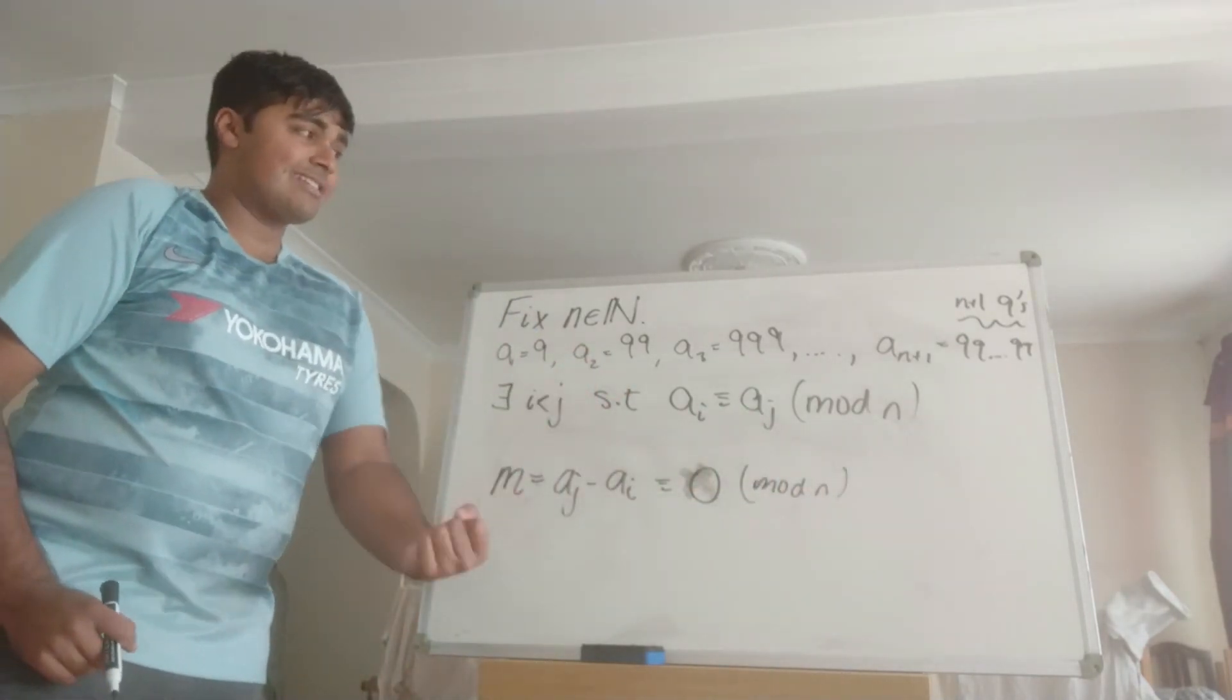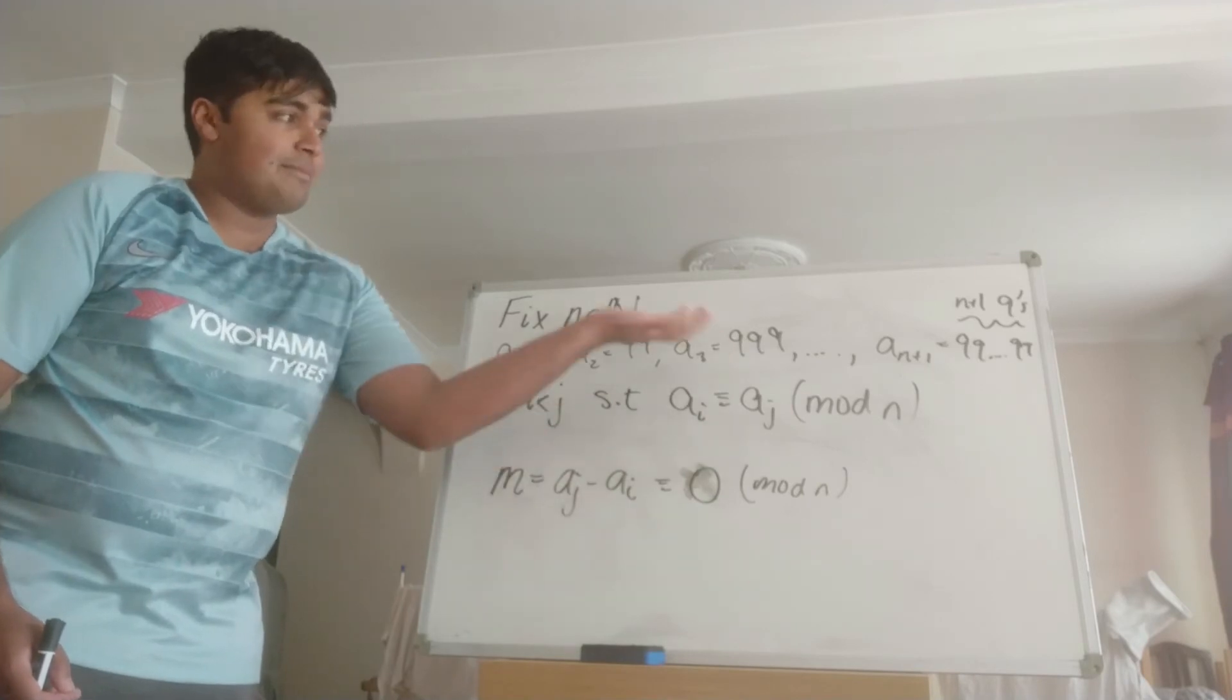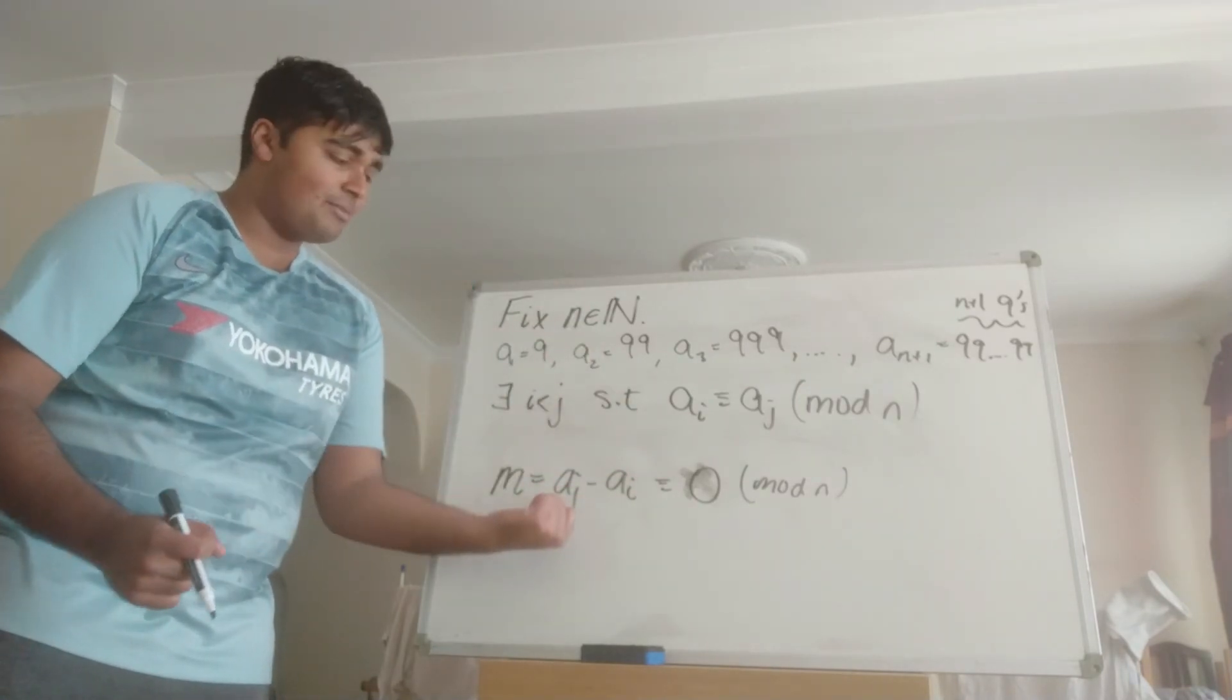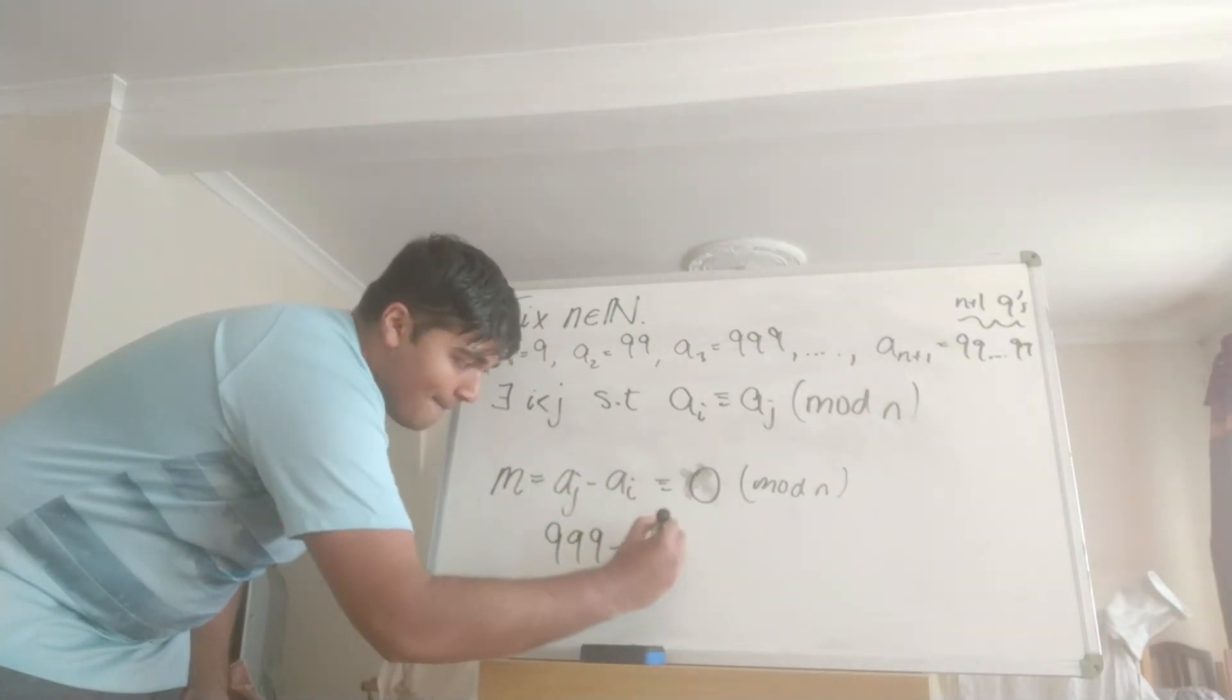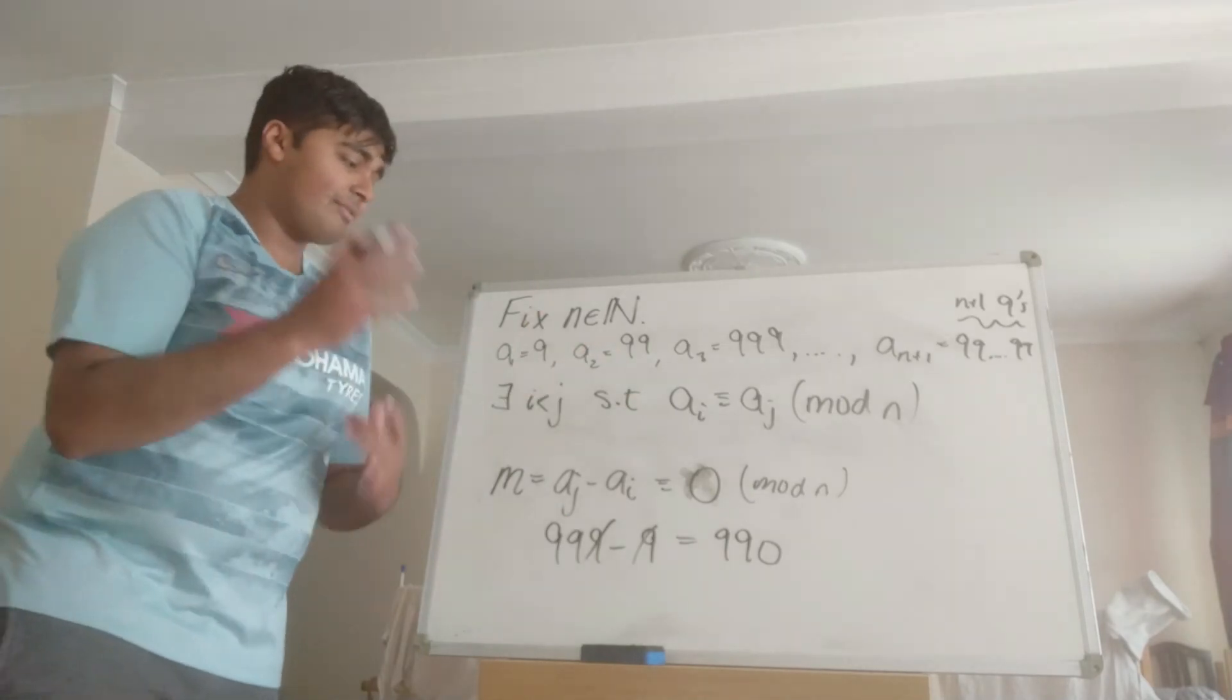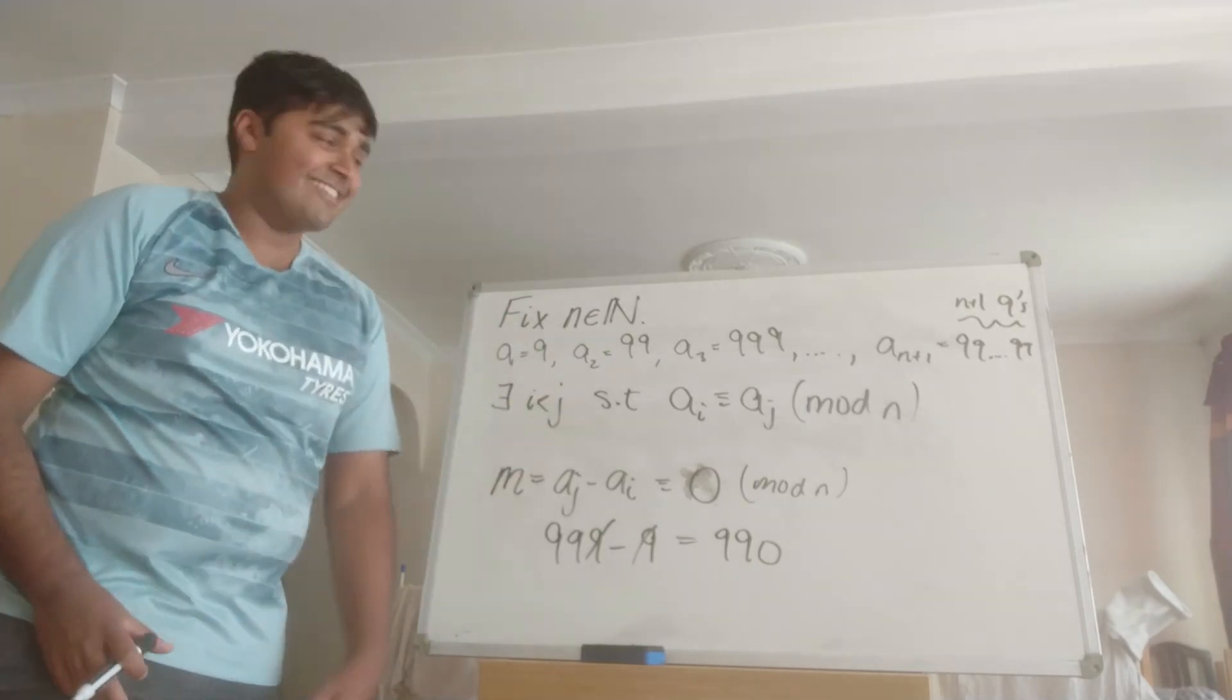But also, we need to check that it's of the form 999, or a bunch of nines and then a bunch of zeros. But that's hopefully quite clear just from looking at this. Because aj is bigger than i, so that means it's got more nines than ai. And then we're subtracting off some tail of that sequence. So perhaps I'll give an example. If j was 3 and i was 1, so then we're looking at 999 minus 9. These nines kind of cancel, and I'm just left with 990. So I get a number of the form, and of course this applies for any j and i. And of course we've just made, without loss of generality, assumption that j is bigger than i.